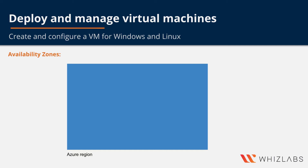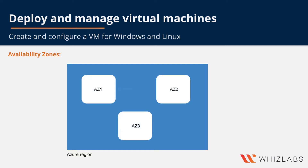An availability zone is a physically separate zone within an Azure region. There are three availability zones per supported Azure region to ensure resiliency. Note that not all Azure regions have support for availability zones.